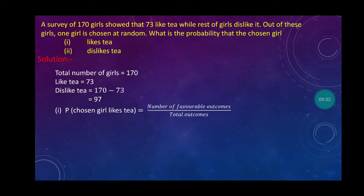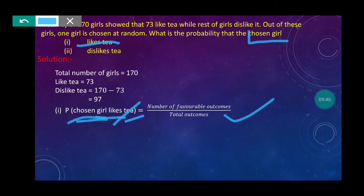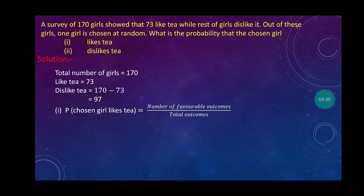First point was like tea. So P(chosen girl likes tea). Event is chosen girl likes tea. Formula is the same. Check, how many like tea? 73. So 73 upon 170. Both digits are not divisible by any common factor, so write it as is.